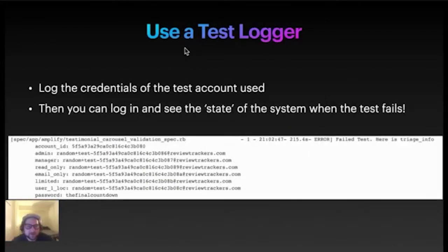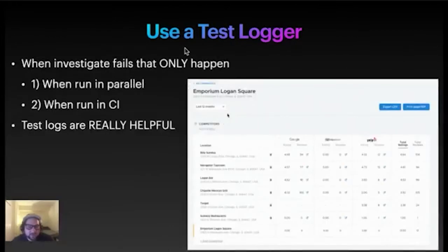One last thing that we do with our test logger at ReviewTrackers: we log the credentials of the test account used for each test. That is incredibly helpful because then you can log in and see the state of the system when the test failed. This is pretty much the first thing I ever do when I see a test failure — I look at the logs, look at the admin username and password and account ID, and then investigate the state of the system when it failed. In the case I described earlier, when we were seeing that the filter change wasn't reflecting, I went and logged into that account, filtered for myself, and I actually was able to see it with my own eyes — the data isn't changing when I changed from 12 months to two years.